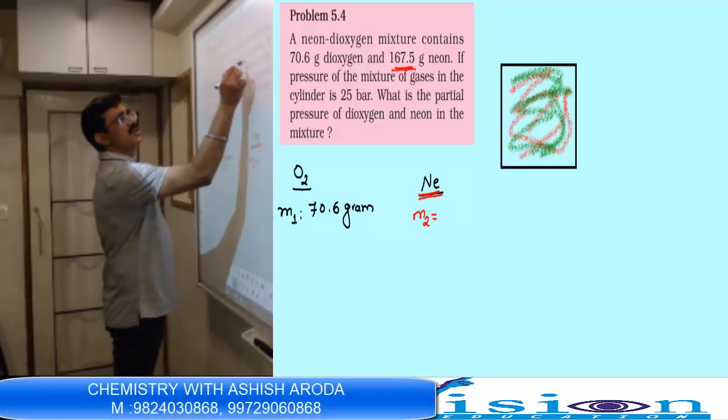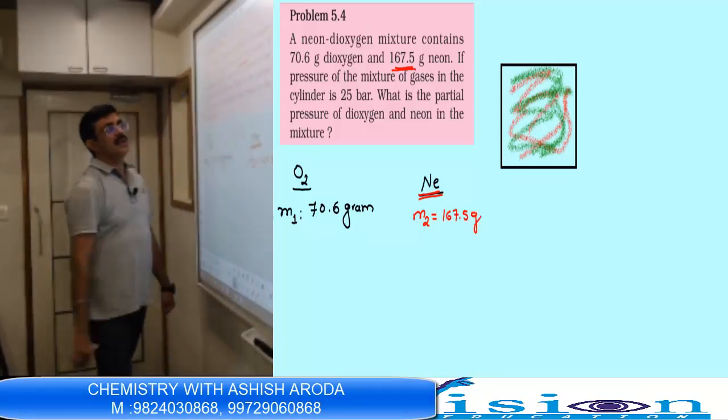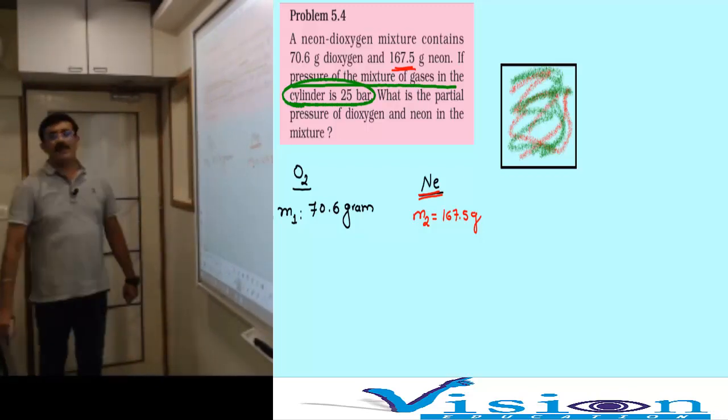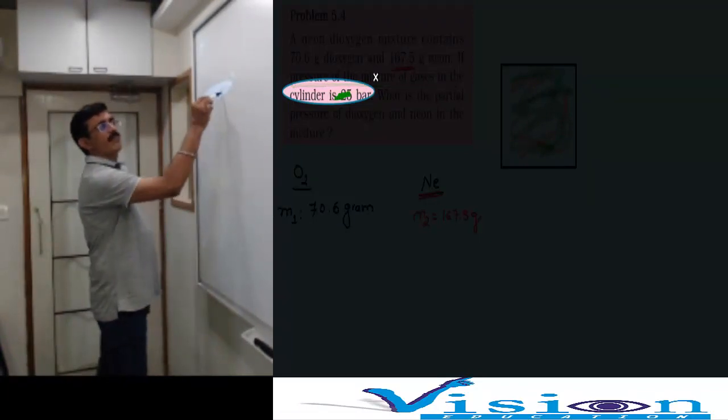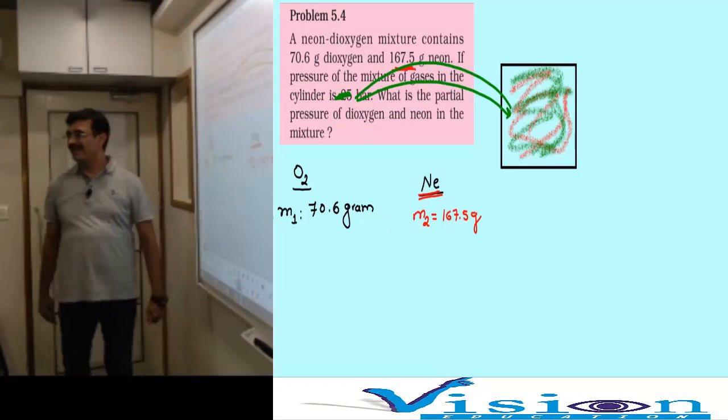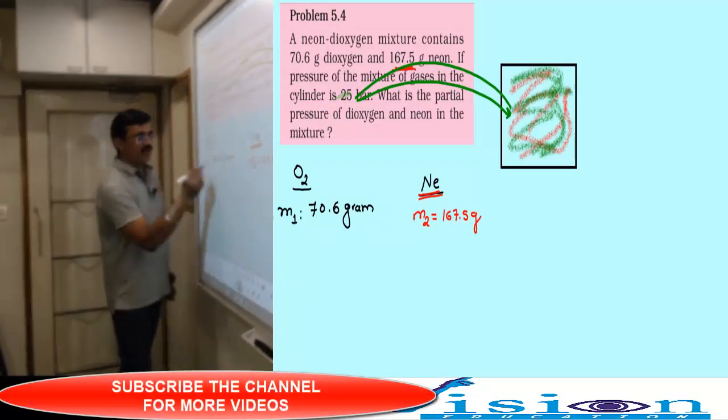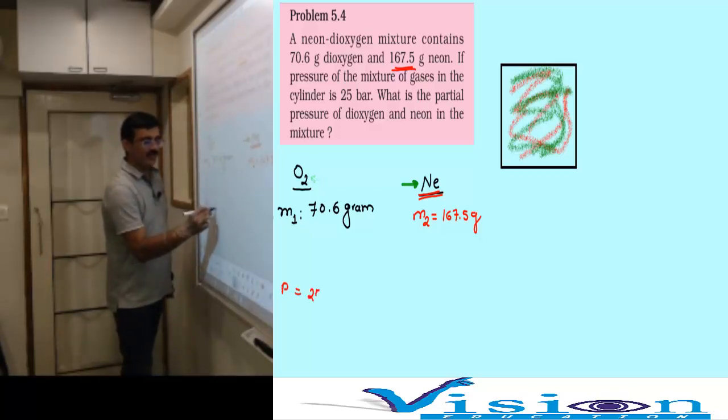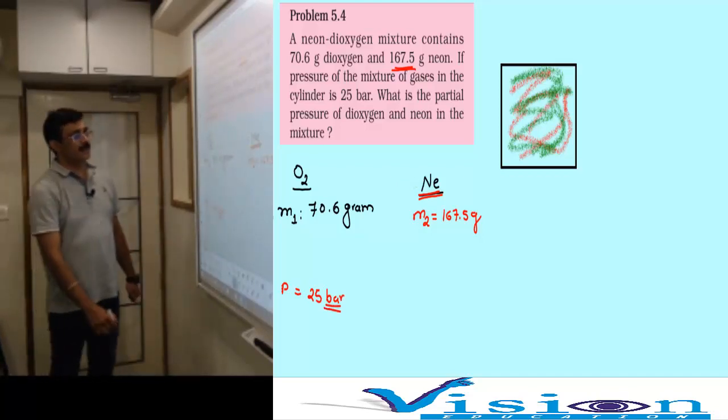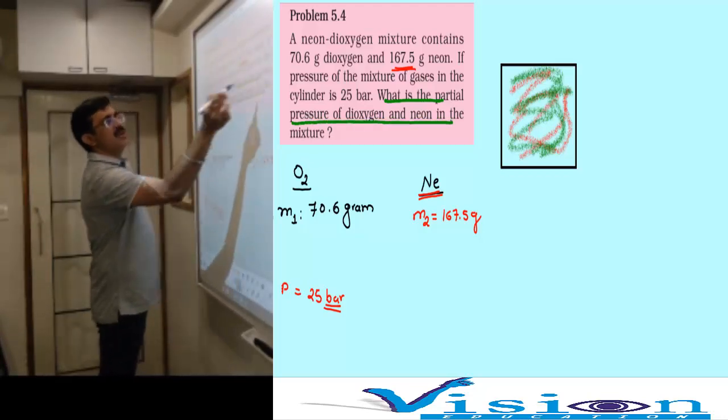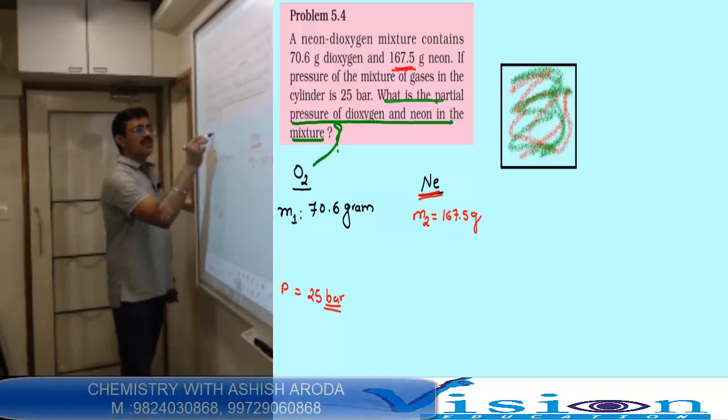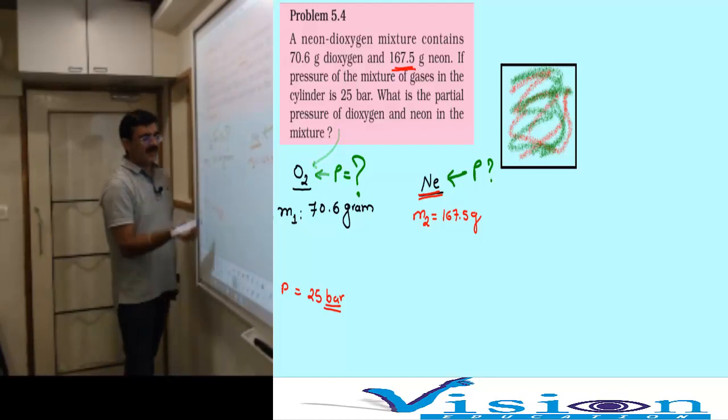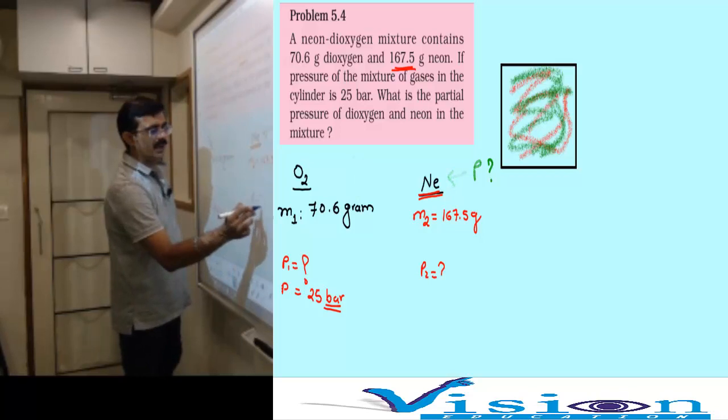The pressure of the mixture of gases in the cylinder is 25 bar. This pressure is of the mixture of the gases, so we write p total equals 25 bar. Then they are asking what is the partial pressure of oxygen and neon in the mixture?